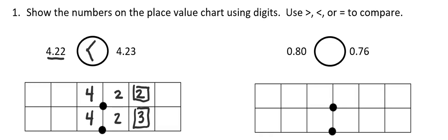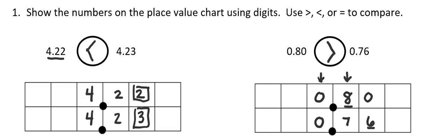If I look at the next problem, here I have a 0 in the ones place, an 8 in the tenths place, and a 0 in the hundredths place. I'm comparing that to a number that has a 0 in the ones place, a 7 in the tenths place, and a 6 in the hundredths place. I have no ones in either number, so I can see that I have 8 tenths compared to 7 tenths. That automatically means the first number is greater than the second number. It doesn't matter how many more numbers I have after the tenths place. We would read this as 0 and 80 hundredths is greater than 0 and 76 hundredths.